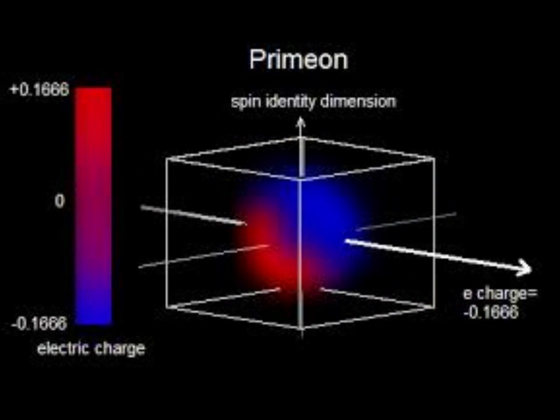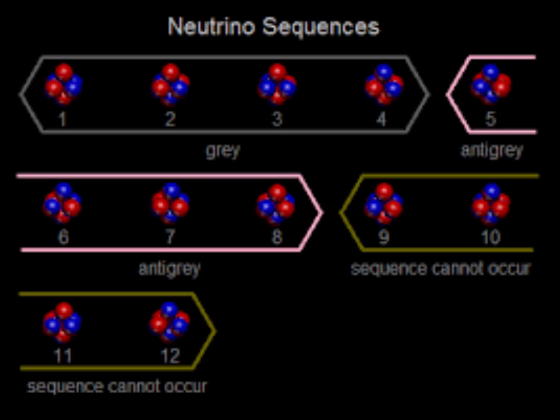Electron neutrinos are created in the hot furnace of our sun, as strong gravitational pressure at the sun's core heats up and fuses the nuclei of its hydrogen and helium gases. As they fuse, they release energy including x-rays, gamma rays, and electron neutrinos.